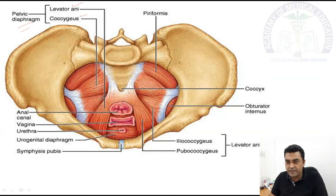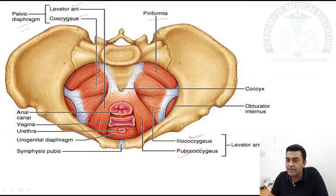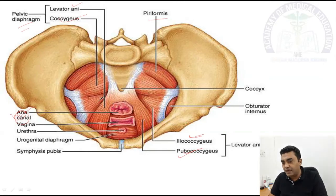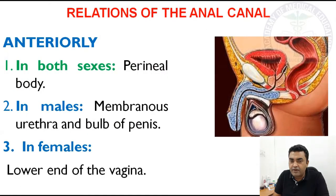The levator ani muscle is formed by iliococcygeus and pubococcygeus. Together with the coccygeus and piriformis muscles, they form the pelvic diaphragm. The pelvic diaphragm has two openings in males and three openings in females — one opening for the anal canal, one for the vagina in females, and one for the urethra which is common to both males and females.